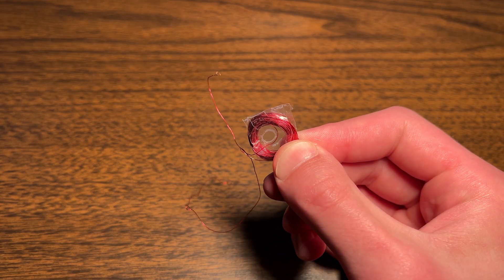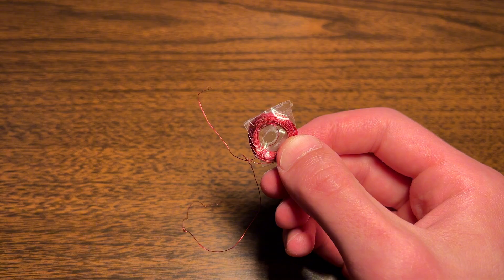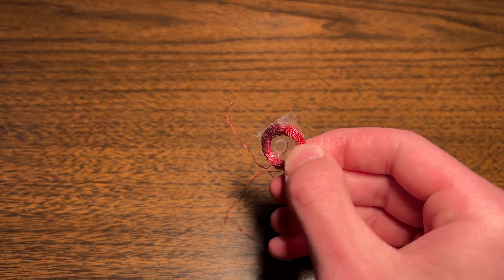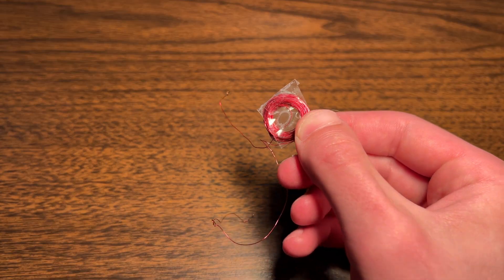If we run electricity through a coil of wire, it becomes magnetic. Something similar happens in reverse. If we move a magnet by the coil, electricity is generated. And we can actually see this signal if we connect it to a computer. That blip is a magnet passing by the coil.